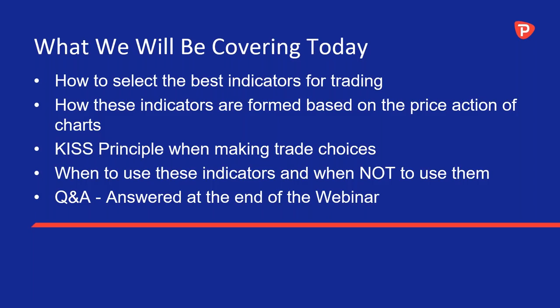The problem is a lot of the indicators on charts are actually overlapping each other, not giving any new information. Half of them are contradicting each other and the other half are giving the same information. The most important indicator of all is price, of course. The price chart is the most important thing and the indicators are secondary, so we really have to be mindful of that when loading up our screen with too many indicators.